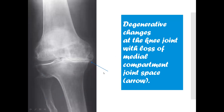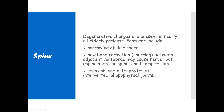Here you can see the joint space, but here there is narrowing of the joint — in fact, there is almost total loss of joint space. Moving on to the spine: degenerative changes are present in nearly all elderly patients.